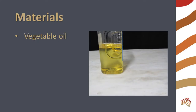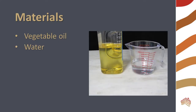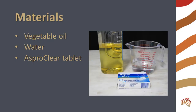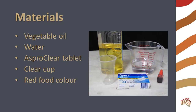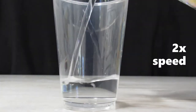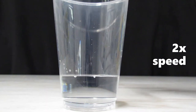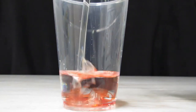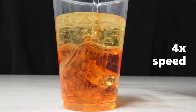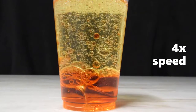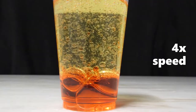You will need some vegetable oil, water, an Aspro Clear tablet, a clear cup, and red food coloring. Fill about a quarter of the cup with water and add a drop of food coloring. Then pour in a thick layer of oil. The oil and water represent different types of magma.